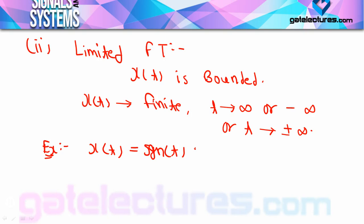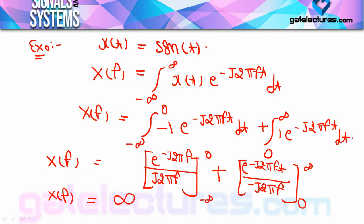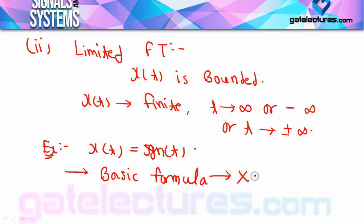An important point: when we calculated the Fourier transform of signum(t) using the basic formula, we got infinity. This means you cannot use the basic Fourier transform formula for a limited defined Fourier transform — your answer will be wrong. Keep this point in mind clearly.